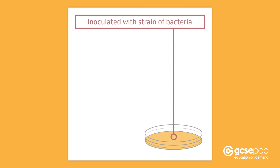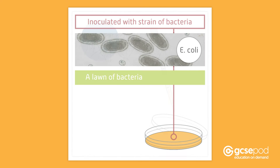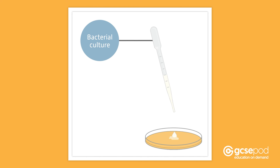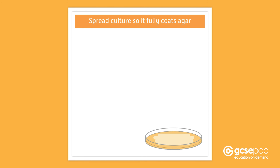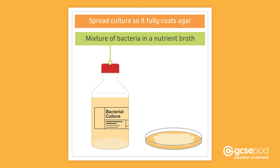The surface of the agar is then inoculated with a strain of bacteria, such as a harmless form of E. coli. You need a lawn of bacteria for this investigation. The easiest way to do this is to use a pipette to put a few drops of a bacterial culture over the plate and then use a glass spreader to spread the culture so it fully coats the agar surface. It's important that both the pipette and the glass spreader are sterilised to avoid contaminating the agar plate. A culture is a mixture of bacteria in a nutrient broth.